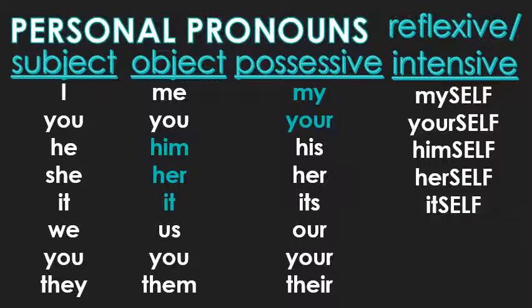I want you to see first person and second person — I and you. You want to use the possessive form of the personal pronoun. But for the third person — him, her, it — that's when you're going to use the object form.